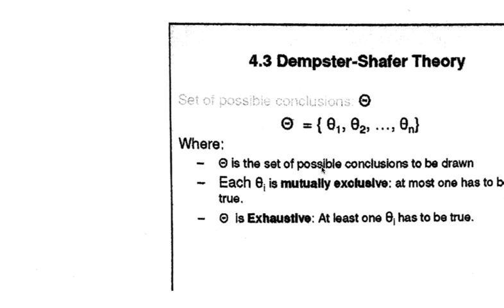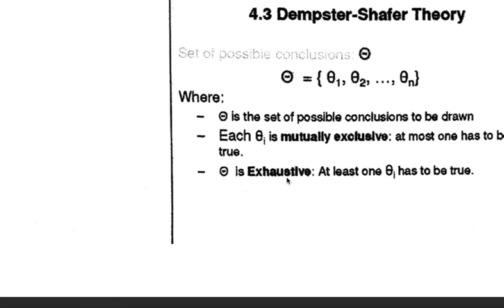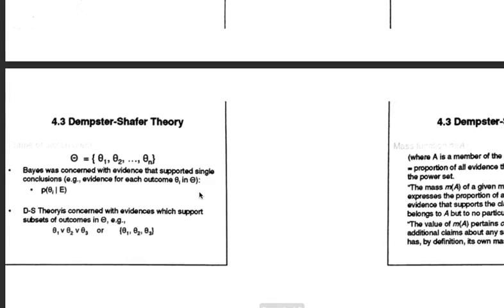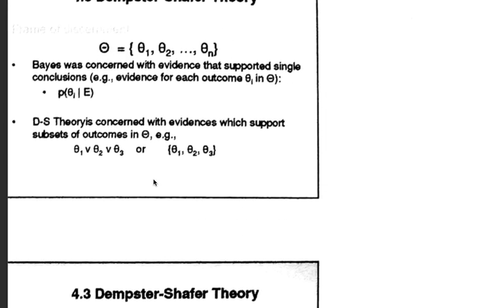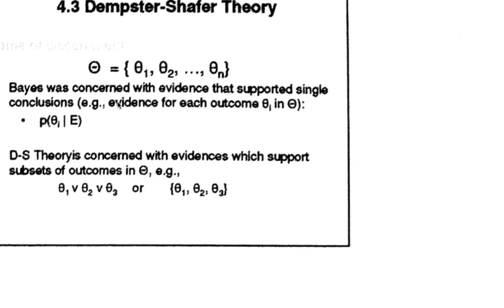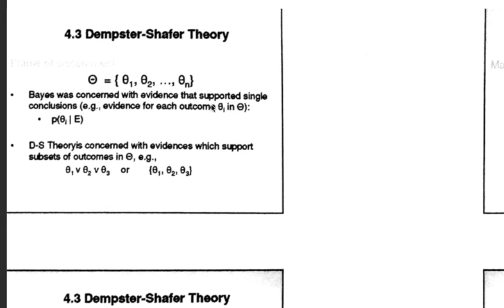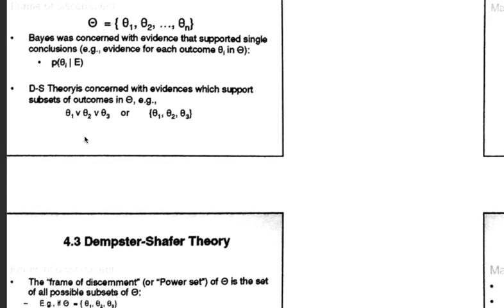Theta is a set of possible conclusions to be drawn, and theta is mutually exclusive — one of the following has to be true. You can see from this presentation what belief and plausibility mean. The Bayesian approach was concerned with evidence that supports a single conclusion, giving a 50-50 chance of it being true or false. But in DST, Dempster-Shafer Theory, we try to give it a range — a belief range.